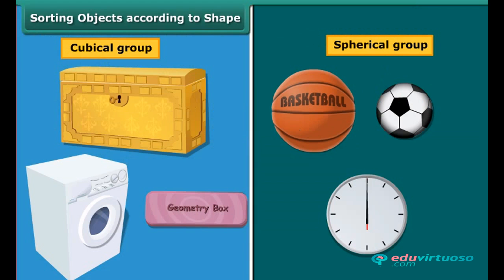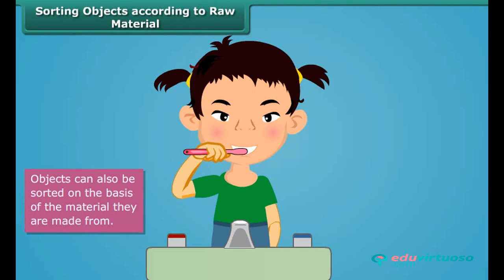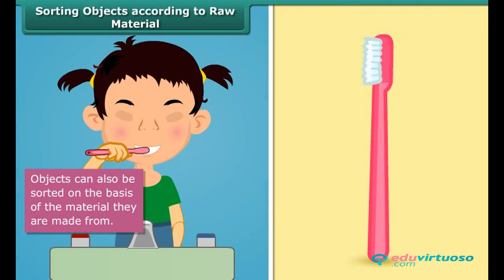Circular or spherical objects form one group, while cubical, cuboidal, square, and rectangular objects form another group. Such classification allows us to study and analyze the properties of different shapes. The first object you use as soon as you wake up is your toothbrush — have you ever wondered what it is made of? It is made of plastic.